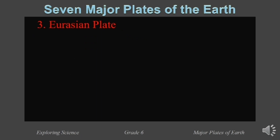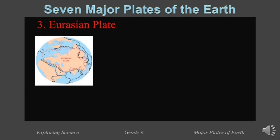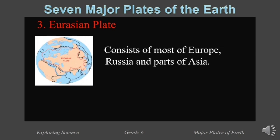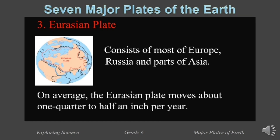Third, it is the Eurasian plate. The Eurasian plate consists of most of Europe, Russia, and parts of Asia — as the name suggests, Eurasian. On average, the Eurasian plate moves about one quarter to half an inch per year.